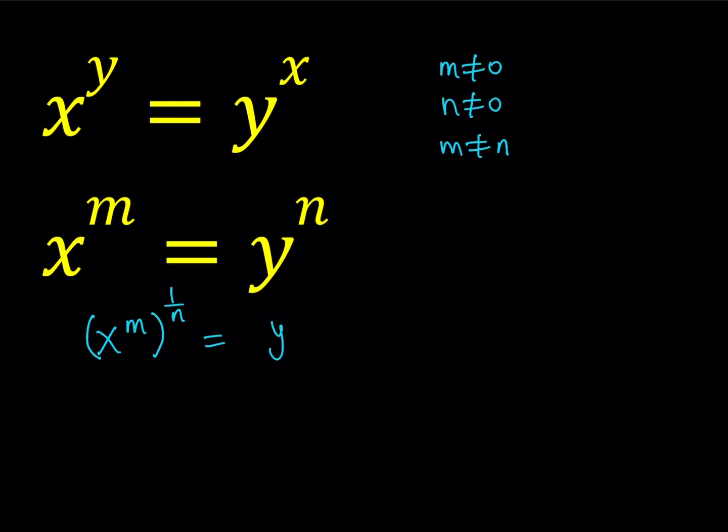And what that does is basically that isolates the y on the right hand side so that we can write one of the variables in terms of the other. This should give us y equals x to the power, and of course we have the power of a power rule where we multiply m times 1 over n which gives us m over n.